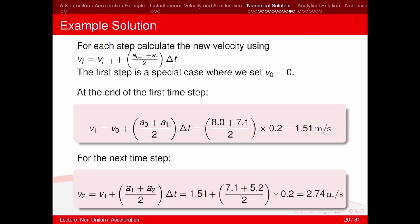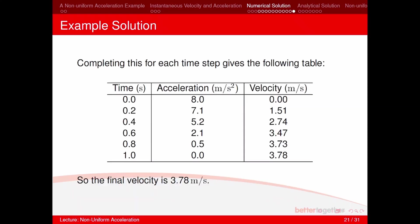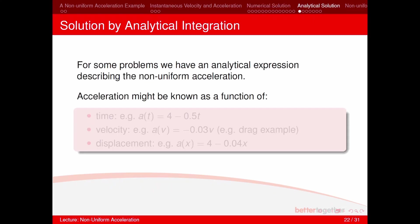Repeating this for all time steps: the velocity at step 2 is 2.74 m/s. Completing the table for each time step adds a velocity column, and the final velocity is 3.78 m/s. That was how we solve non-uniform acceleration problems numerically.